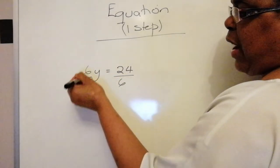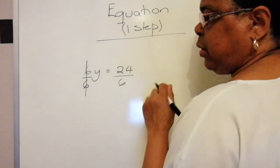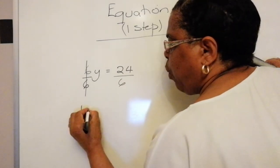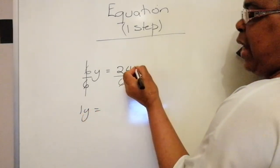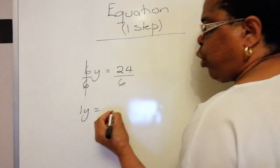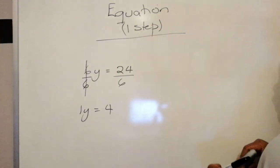6 divided by 6, that cancels out. So that's 1, 6 into 6, 1. So we'll have 1y remaining. And then 24 divided by 6 is 4. So now we have 1y is equal to 4.